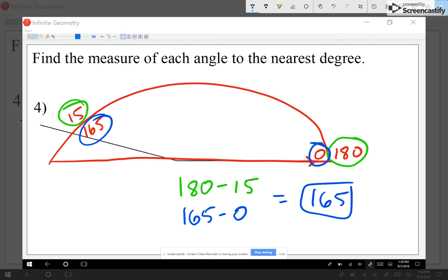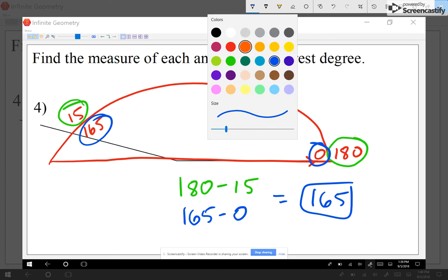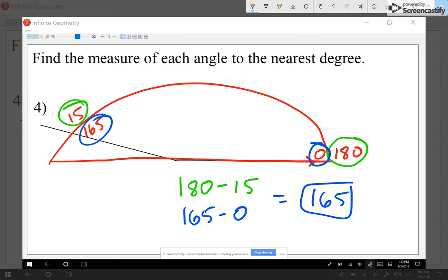So either subtract both numbers on the outside, 180 minus 15, or both numbers from the inside, 165 minus 0. Whichever one you do, you get the same answer. The only thing is, do not mix and match. What I mean with that is, let me choose a number from the outside and let me choose a number from the inside.